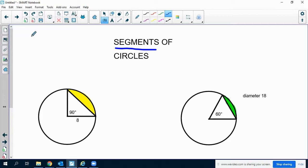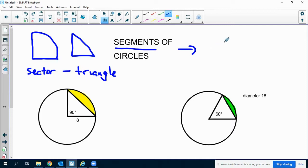So once again, we take a sector and then we take a triangle, and when we subtract those two things, what's left is called a segment.